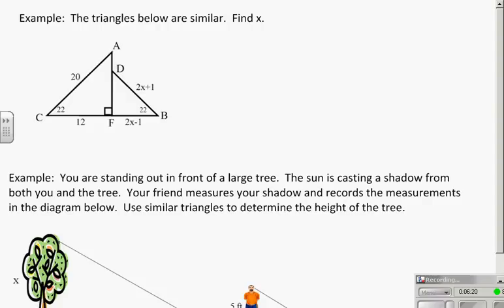This example is just a straightforward example of proportions. Triangle CAF is similar to triangle BDF. Set up your proportions, cross-multiply, problem solved.